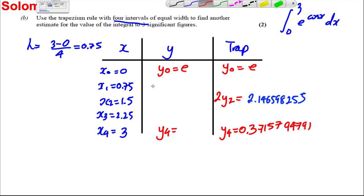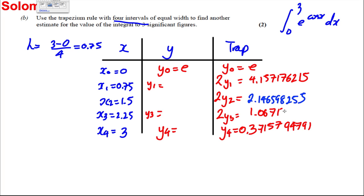So now all I've got to work out is I've got to work out Y₁ and Y₃. So what happens when I put in this into the calculator? Well, e to the cos, I'm going to put in 0.75, and then I'm going to double this. So I'm going to get myself 4.157176215, and I'm going to double Y₃ here. So I'm going to put in, again, e to the power of cos of 2.25, and I'm going to double it. So I'm going to get myself 1.067130807.